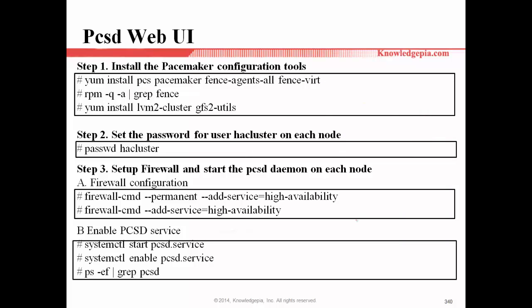PCSD web UI is similar to the Konga in CentOS 6.5. In this part, I will explain the total six steps. Step one: to use the PCSD web UI, install the Pacemaker configuration tools. If you install these configuration tools, later you can use this web UI interface.